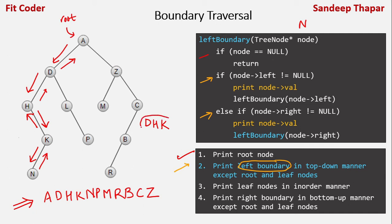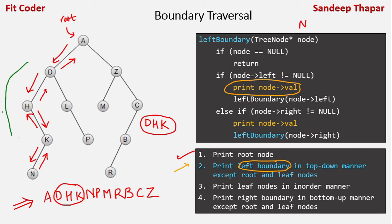This is the left boundary excluding the root and leaf nodes. We are printing the node before recursing left or right, so this is a pre-order traversal — which is correct for a top-down traversal. We check that left or right is not null to avoid printing leaf nodes. For N, both left and right are null, so neither if nor else condition passes, and N is not printed.